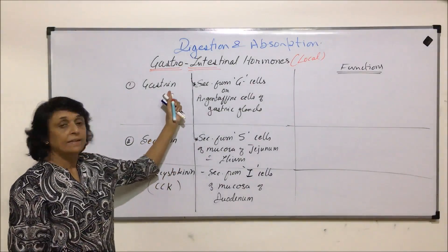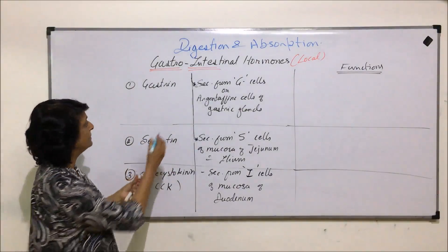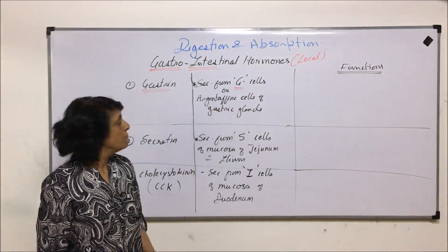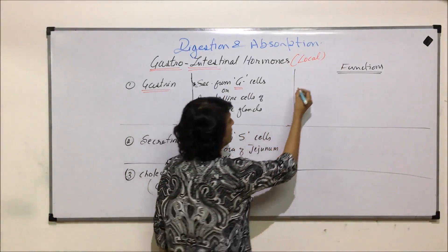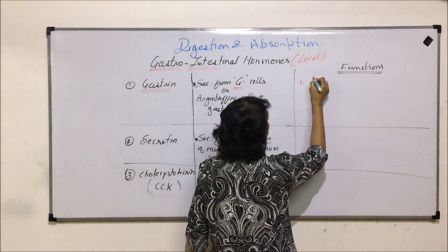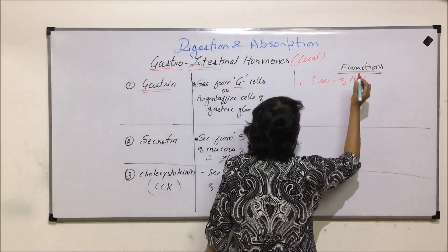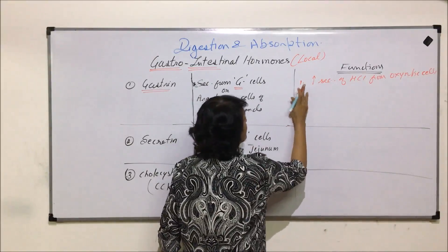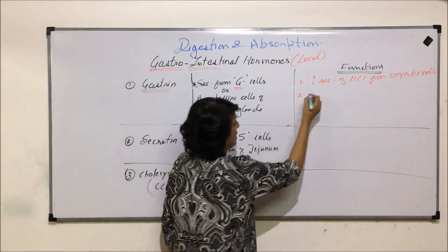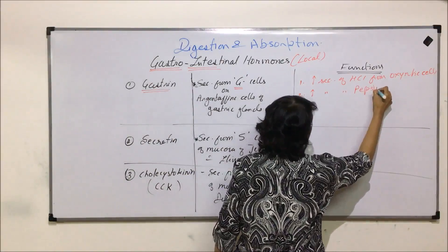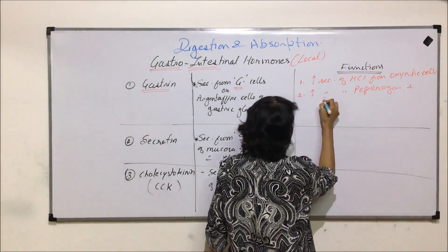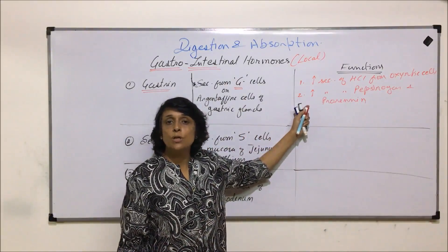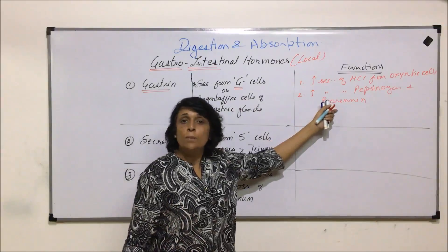The first hormone is gastrin. It is secreted from G-cells, also called argentaffin cells, which are present in the gastric glands in the stomach region. Its functions include increasing the secretion of hydrochloric acid from oxyntic cells, and it also helps in increasing the secretion of the enzymes pepsinogen and pro-renin. So hydrochloric acid secretion is under control of this hormone, and pepsinogen and pro-renin production also increase.